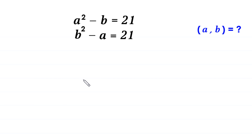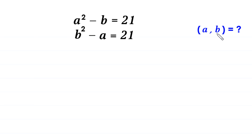Hello everyone, you are welcome. We will solve this system of equations: a squared minus b is equal to 21, and b squared minus a is equal to 21. Our job is to find all possible values of a and b. Let's call the first equation number one and the second equation number two.